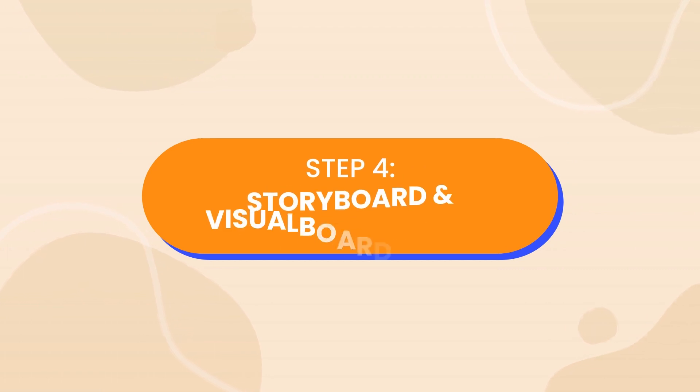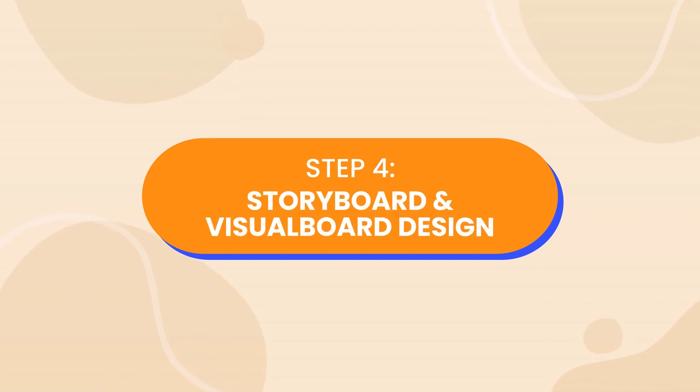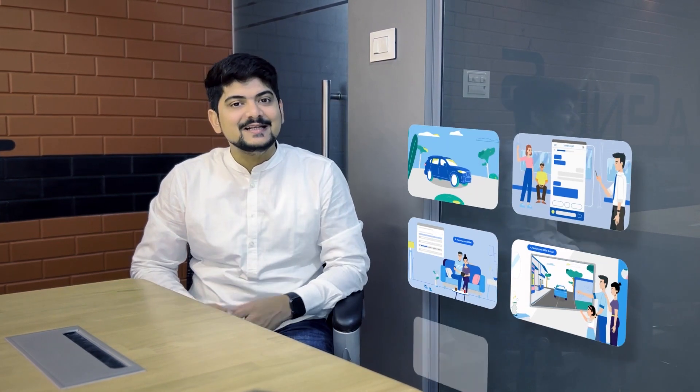Step 4: Storyboards and Visual Boards Design. Storyboards are basically rough sketch style frames which act as a strong reference point for timing, transitions, and camera angles for each scene. Then, we start creating design assets as per your brand guidelines and in sync with the style frames we locked earlier.